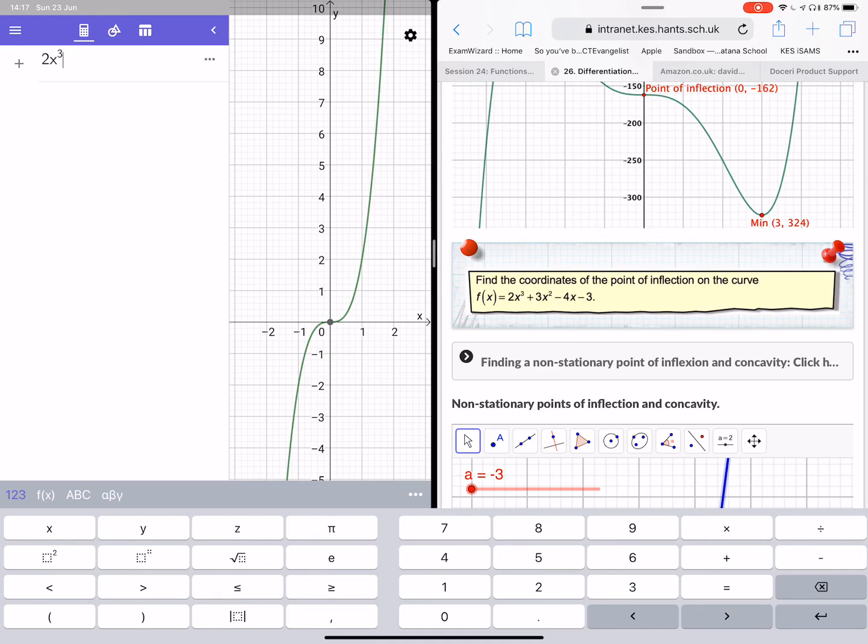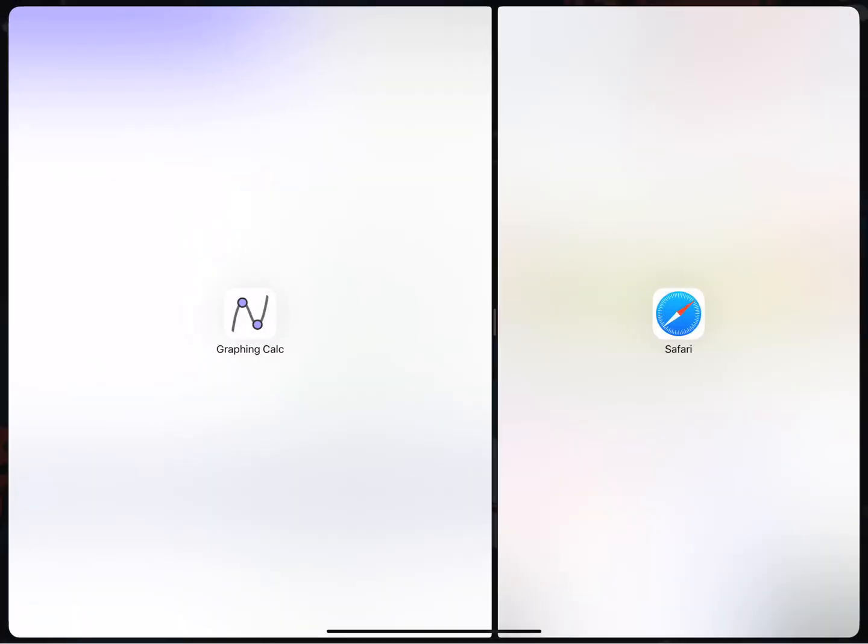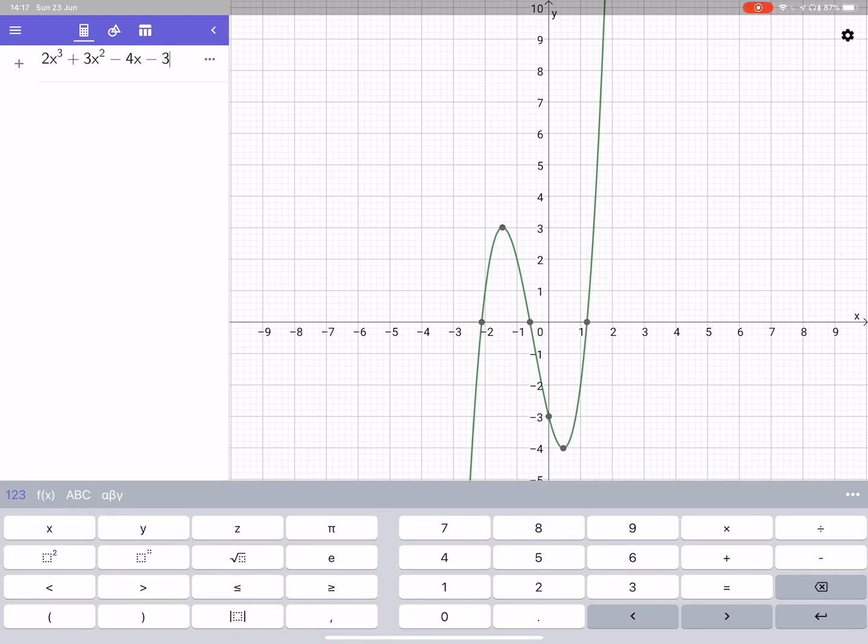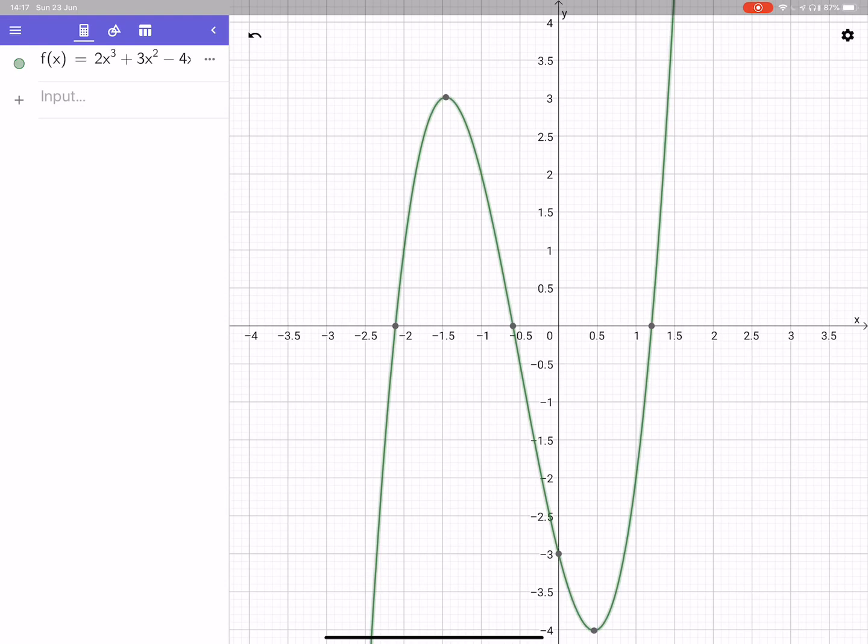Plus 3x, this is automatically a squared button, minus 4x minus 3. And then I don't need the Safari file anymore. Now if with two fingers on the x-axis if you now pull apart you'll be able to make the axis a bit bigger.